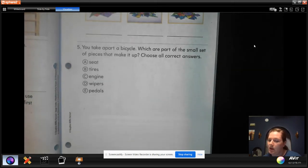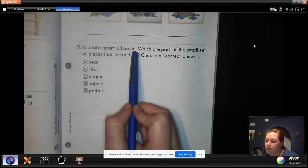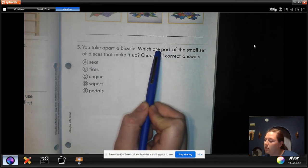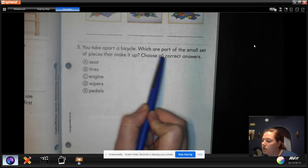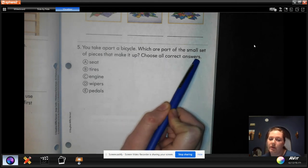Number five. You take apart a bicycle. Which are part of the small set of pieces that make it up? Choose all correct answers. So which ones are part of a bicycle?